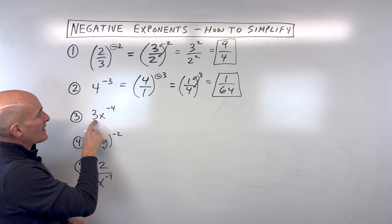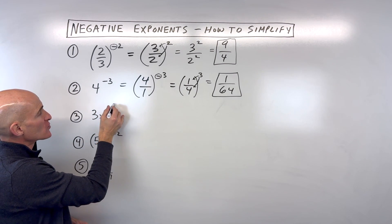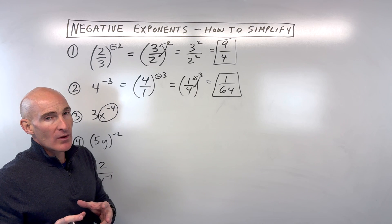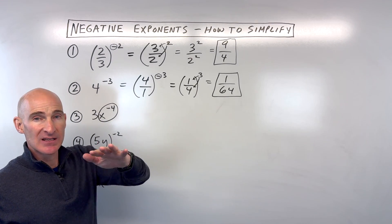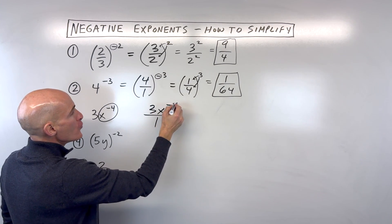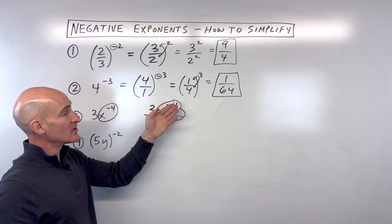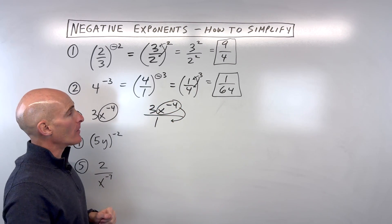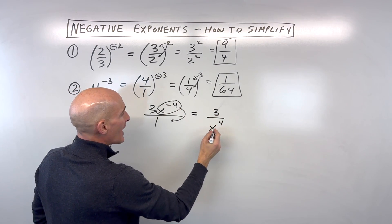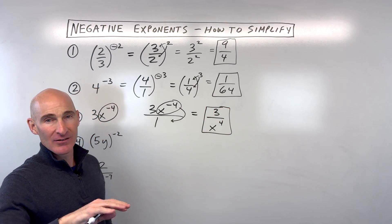Let's look at number three now — this one's a little bit different. We've got three x to the negative four. Notice there are no parentheses here, so this negative four is really just applying to the x, not to the three. Now, when you have a negative exponent, you can think of it as moving that quantity to the other side of the fraction bar. If it's in the denominator, move it to the numerator; if it's in the numerator, move it to the denominator. So this three stays in the numerator, and it's just this x to the fourth that moves to the denominator, switching from negative to positive.